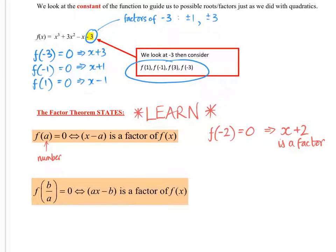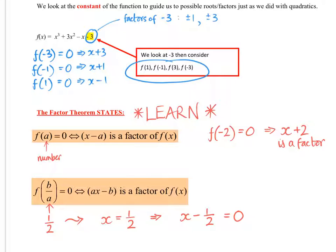Now this one's a little bit trickier. Say the number in there was a half. The way to think about it is x equals a half - that's the x coordinate on the axis. Now remember how we rearranged it: if we rearrange that, we get x minus a half equals 0. So that would be your bracket. However, we don't want fractions in the bracket, so we multiply by 2. So we get 2x minus 1 equals 0. So that tells me that 2x minus 1 is a factor.